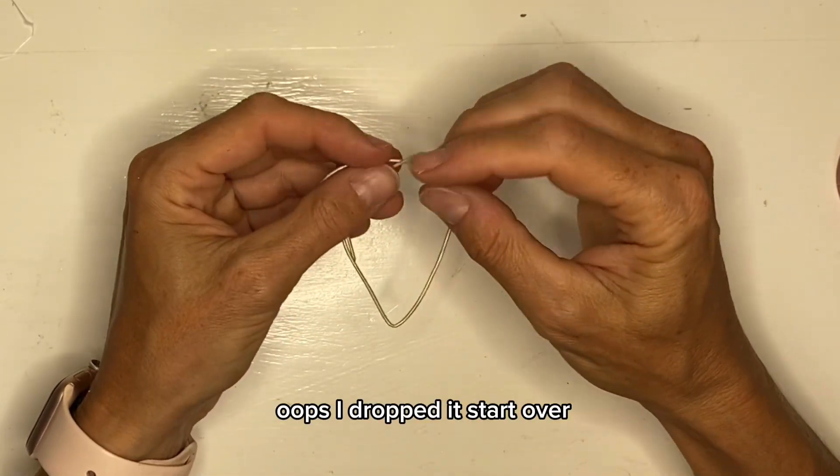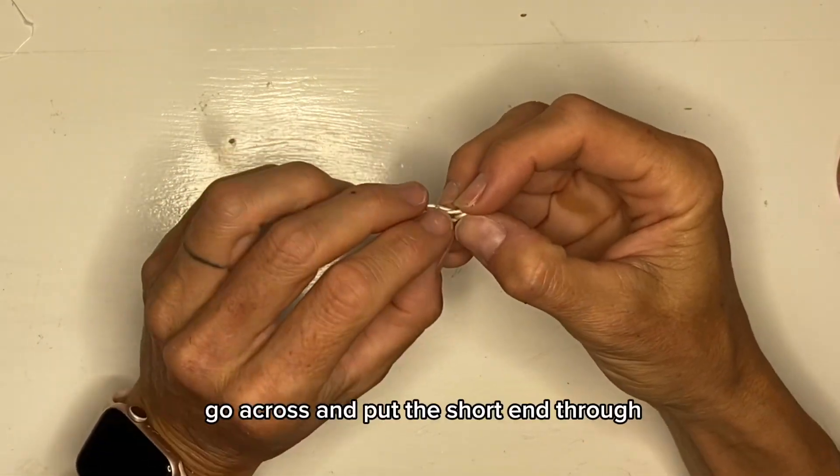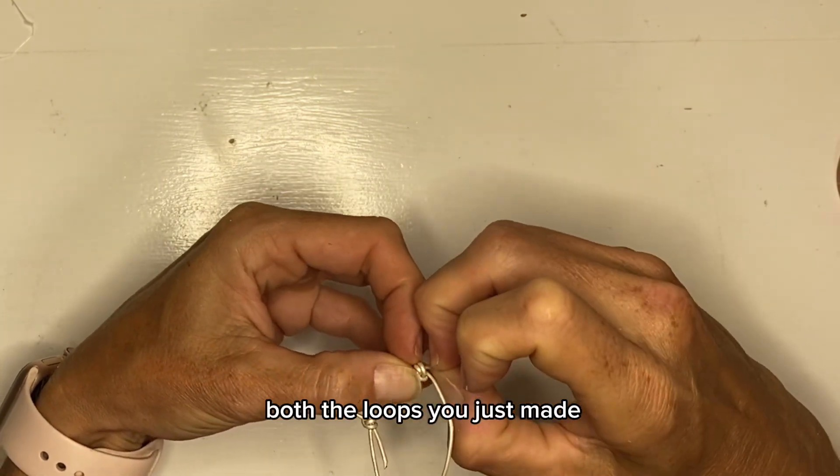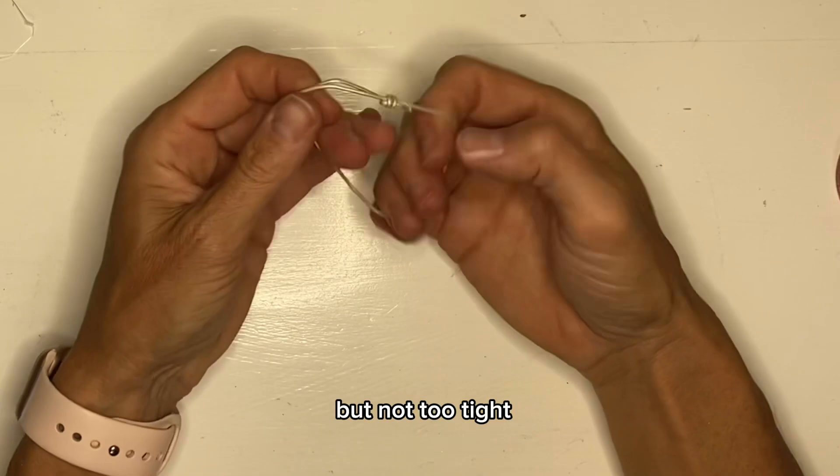Oops I dropped it. Start over. Loop it around twice. Go across and put the short end through both the loops you just made and pull it tight but not too tight.